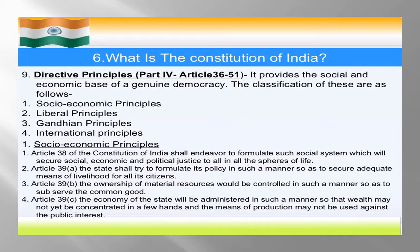Next slide — Directive Principles, Part 4, Article 36 से लेकर 51 तक। To provide the social and economical base of genuine democracy. इसकी classification चार होती हैं: socio-economic principles, liberal principles, Gandhian principles, और international principles। Article 38 of the Constitution of India shall endeavor to formulate such social system which will secure social, economical and political justice to all spheres of life — हर form की life को economically, socially और politically justice provide करना, किसी के साथ किसी तरह का भेदभाव नहीं होगा।